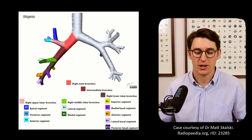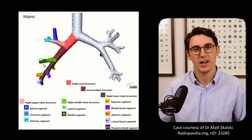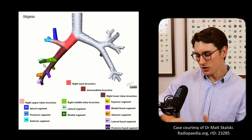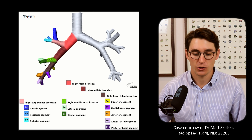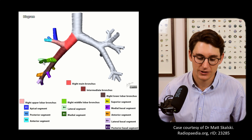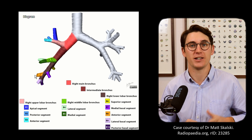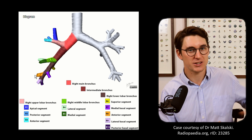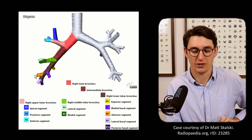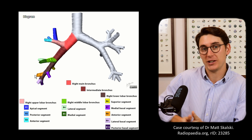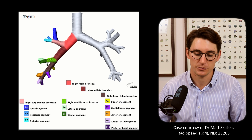The right middle lobe spreads all the way around the lung periphery, so we need a medial and a lateral branch coming off it. This contrasts with the lingular lobe, which doesn't spread all the way around, so it gets a superior and inferior division instead. Here on the middle lobe we need medial and lateral to cover the full extent.